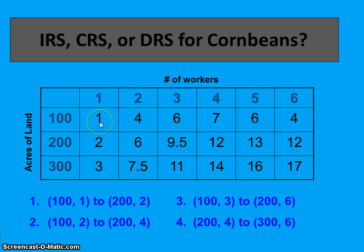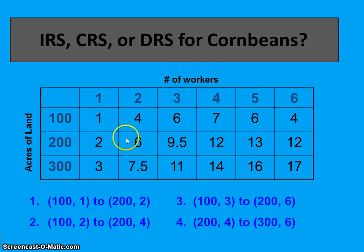With 100 acres of land and one worker you get one bushel of corn beans, and with 200 acres and two workers you get six bushels. When we doubled our inputs, output more than doubled, which means we are operating in increasing returns to scale, or economies of scale. Just know that in the long run, cost savings can arise from size, companies can operate in increasing, constant, or decreasing returns to scale and still make money, and everything is variable in the long run.